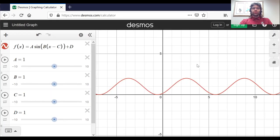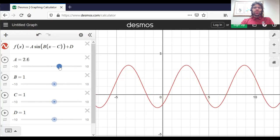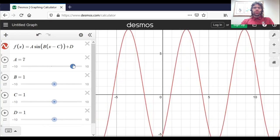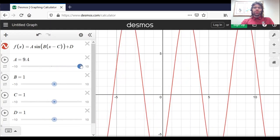So here's the graph of a sinusoidal function. All of these constants A, B, C and D are one. And as A changes, the amplitude changes. And you can see that the bigger A is getting, the bigger the amplitude is getting.